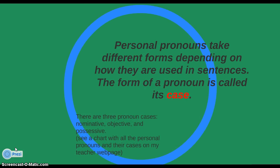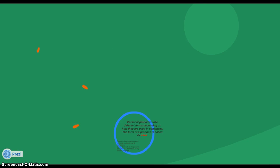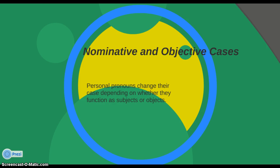Personal pronouns use different forms depending on what you're going to do with them in sentences. The form of the pronoun is called its case. There are three cases — nominative, objective, and possessive. You'll find a chart with all of the personal pronouns and their cases on my teacher webpage and at the end of this video. I'll also upload it to Edmodo. Today we're going to talk about nominative and objective, and save possessive for the next video.